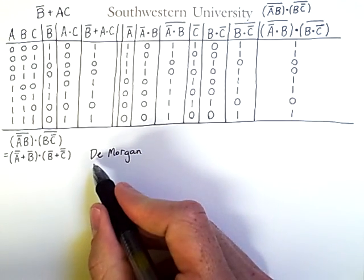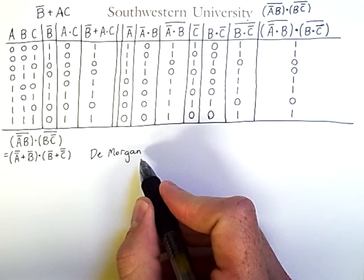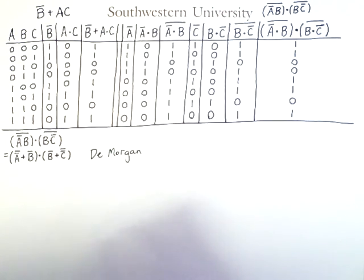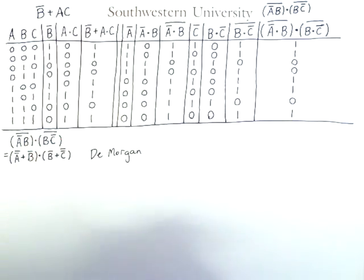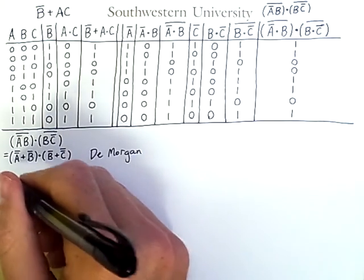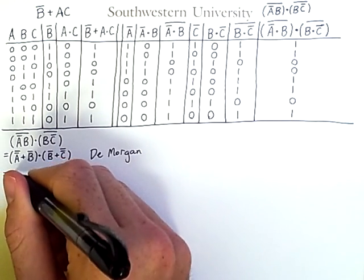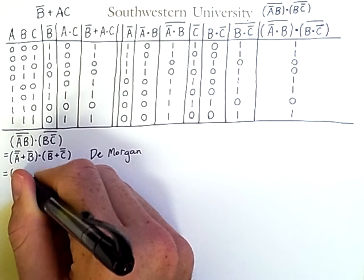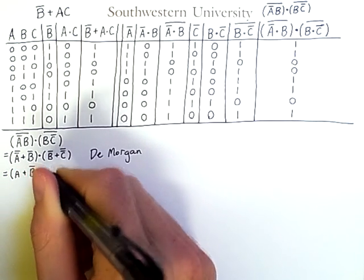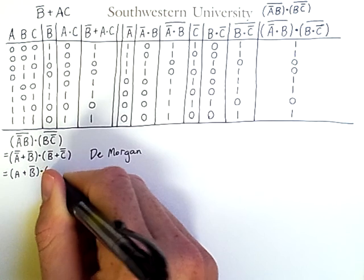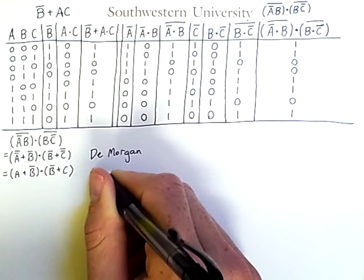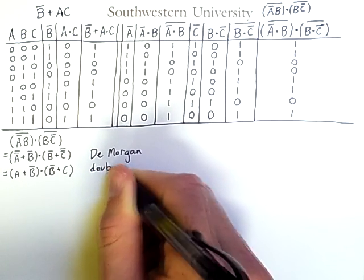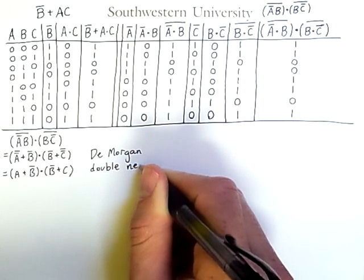I put the name of the logical identity I'm applying at the margin of the expression. Now, we have two variables here with double negations. We're going to remove those using double negation law. So we'll be left with A or not-B and not-B or C. And double negation is the justification.